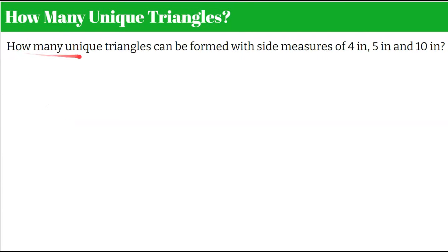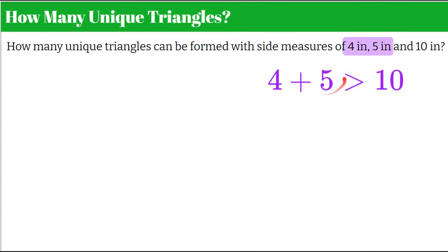How many unique triangles can be formed with the side measures of four inches, five inches, and ten inches? We're going to try the triangle inequality theorem first. Four plus five is nine — we already have a rule breaker. Nine is not greater than ten. So we can already say no triangle can be formed because if one fails, the whole thing fails. They all have to be correct to be a triangle.